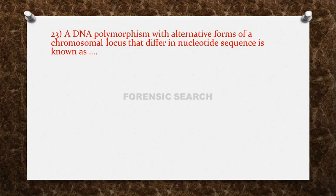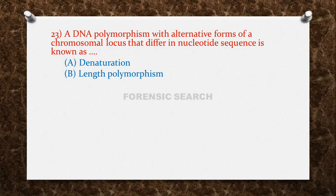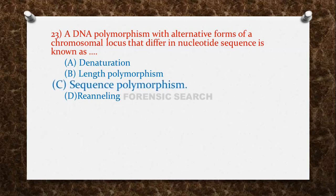The next question: a DNA polymorphism with alternative forms of a chromosomal locus that differ in nucleotide sequence is known as — Option A: denaturation. Option B: length polymorphism. Option C: sequence polymorphism. Option D: re-annealing. The correct answer is option C — sequence polymorphism.